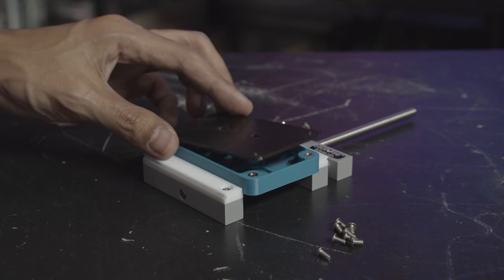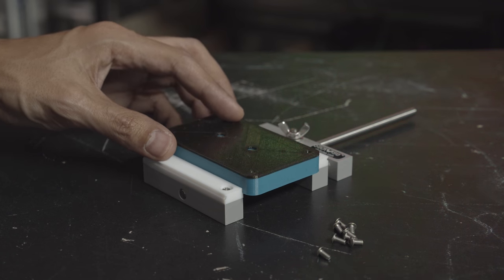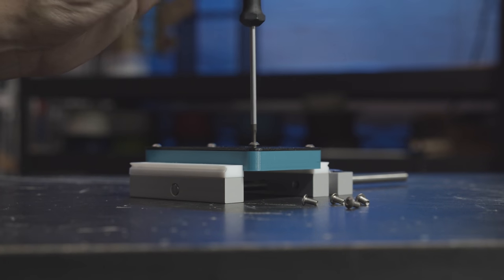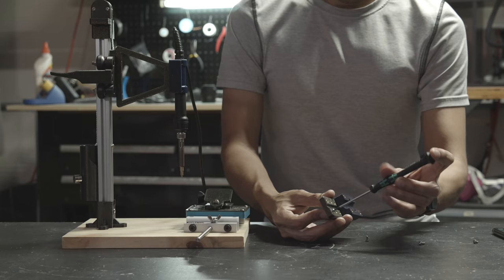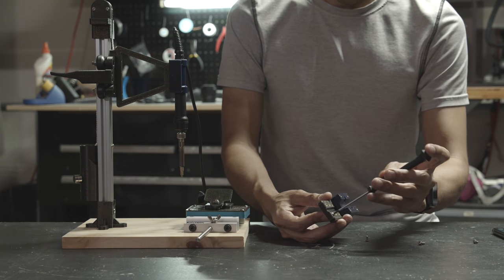Threaded inserts are pretty good for making bolted connections, especially when you're securing parts together. Adding metal threads to your parts kind of adds more durability to it, because you can loosen the connection and take it apart without wearing out the threads.